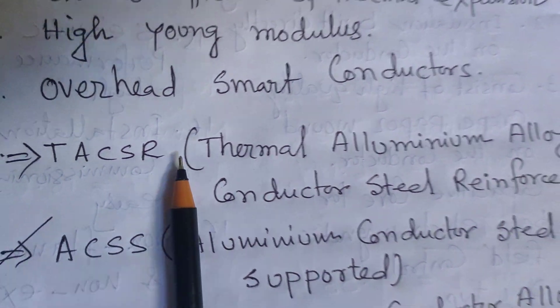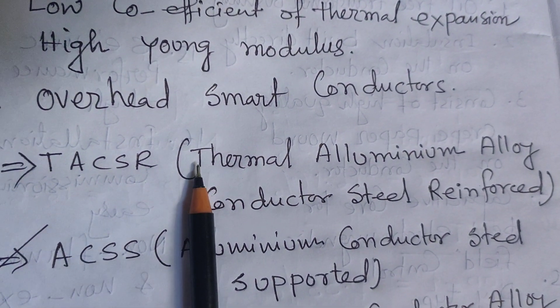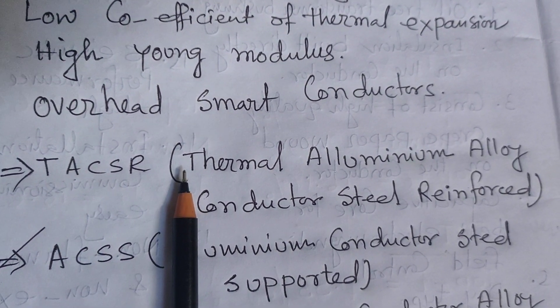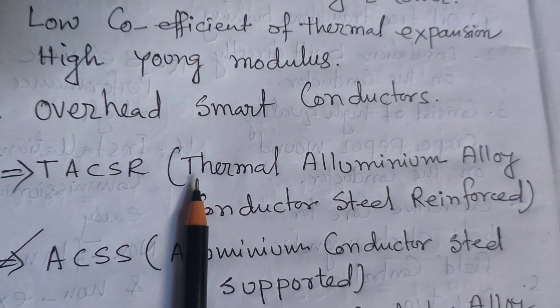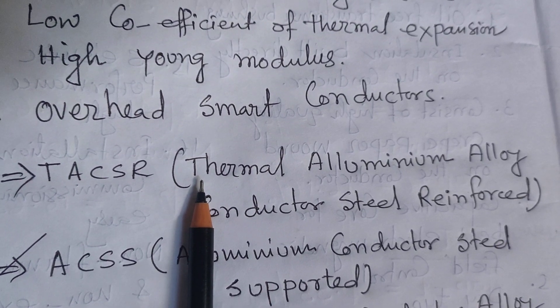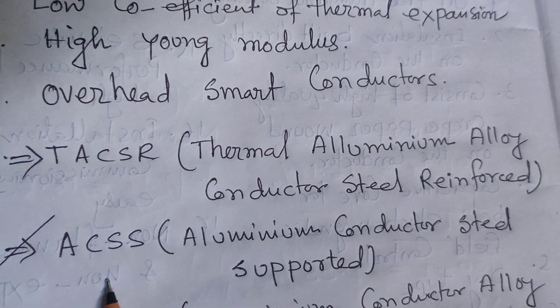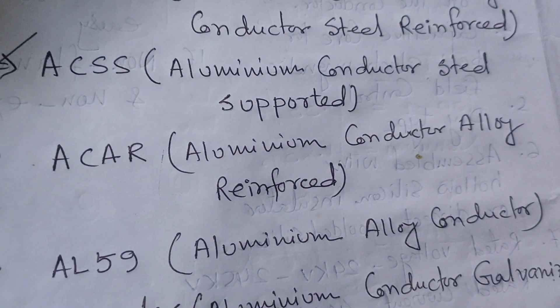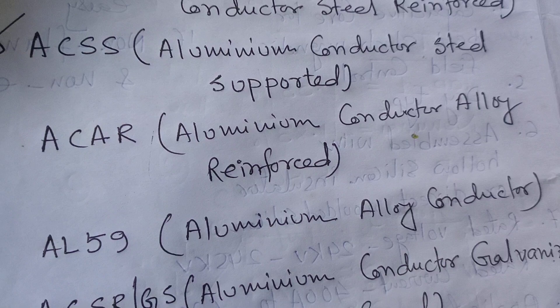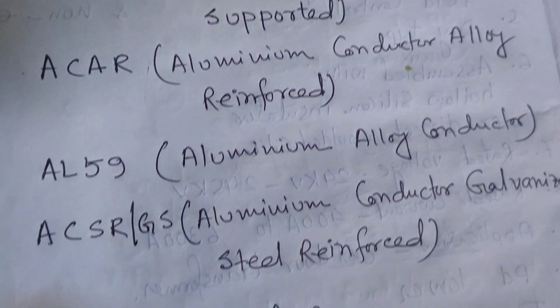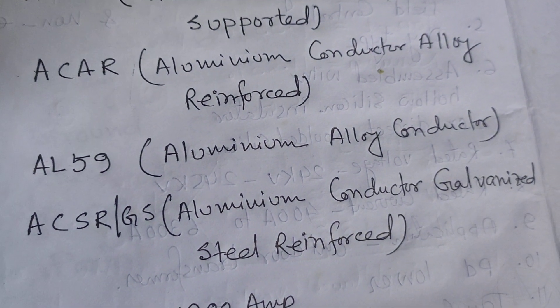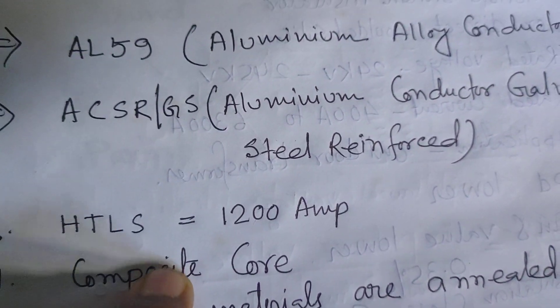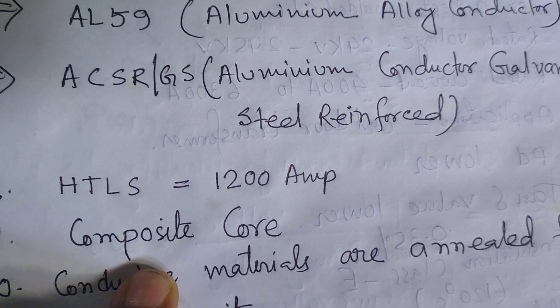Few types of HTLS conductors are now being used in India and throughout the world for the betterment of society, to flow lots of current while sustaining high temperatures. HTLS conductors equivalent to ACSR Zebra have capacity to flow 1200 ampere current, and equivalent to ACSR Panther have 800 ampere capacity.